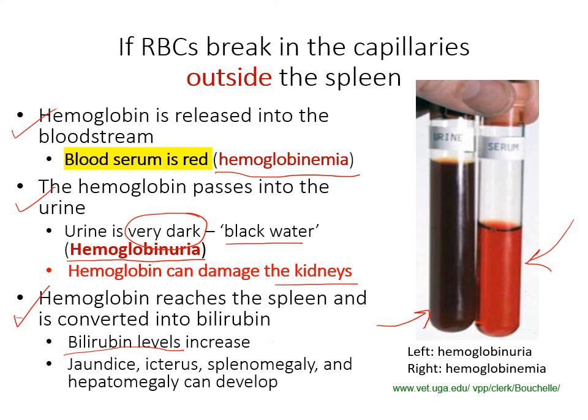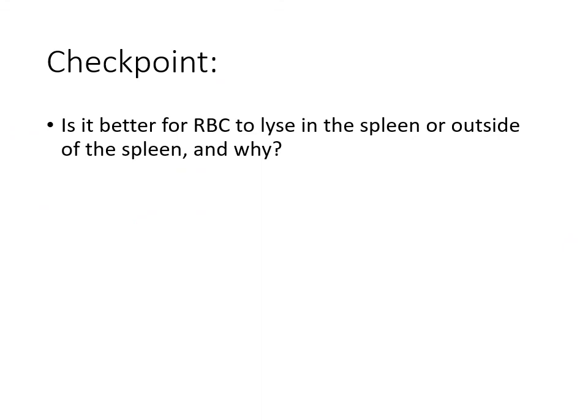The key difference is that when red blood cells break outside the spleen, hemoglobin is released directly into the blood serum and also into the urine, and hemoglobin is very damaging to the kidneys. This raises the question: is it better for red blood cells to lyse in the spleen or outside of the spleen, and why?